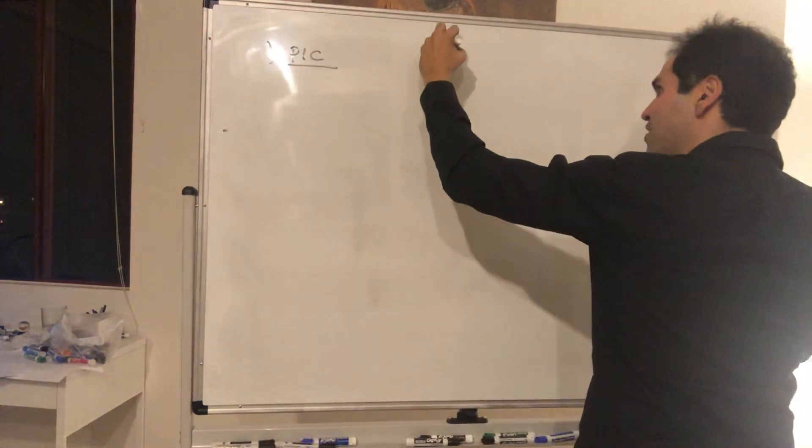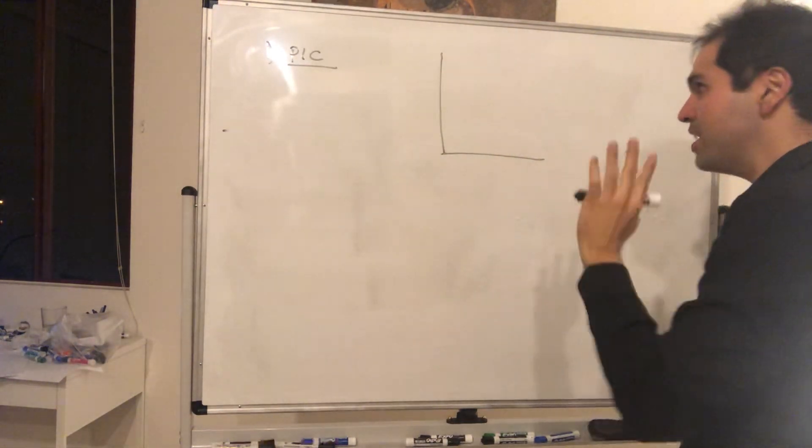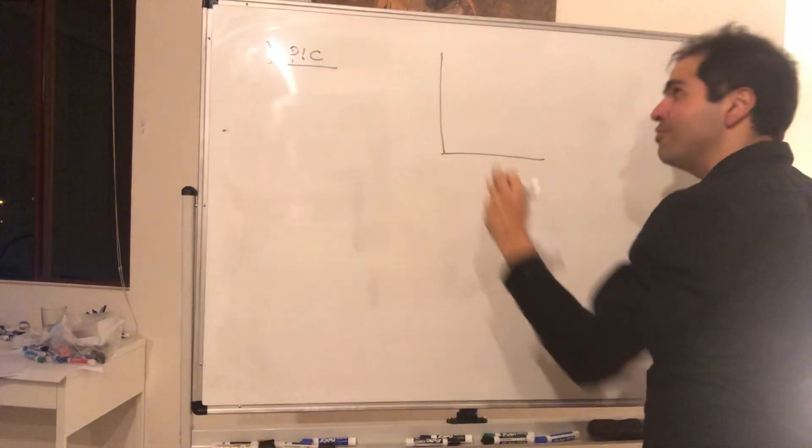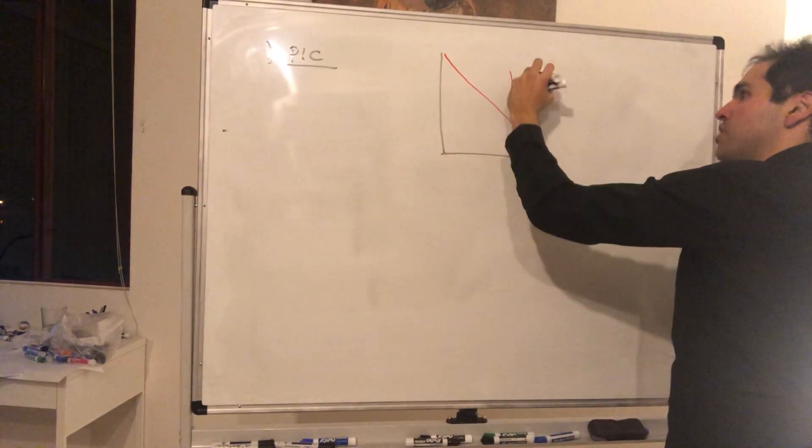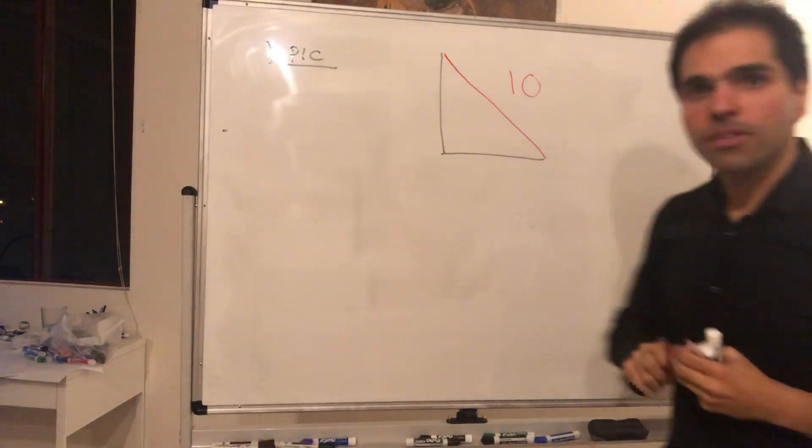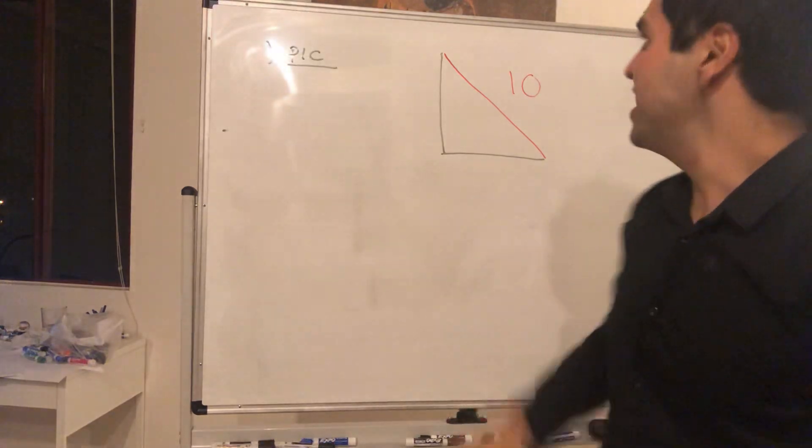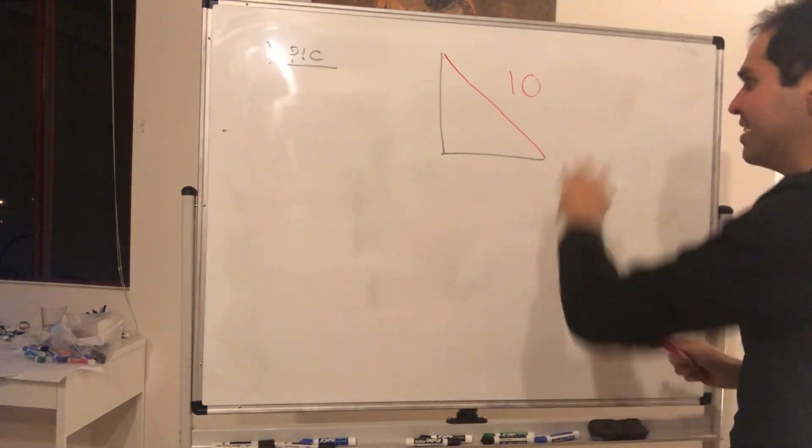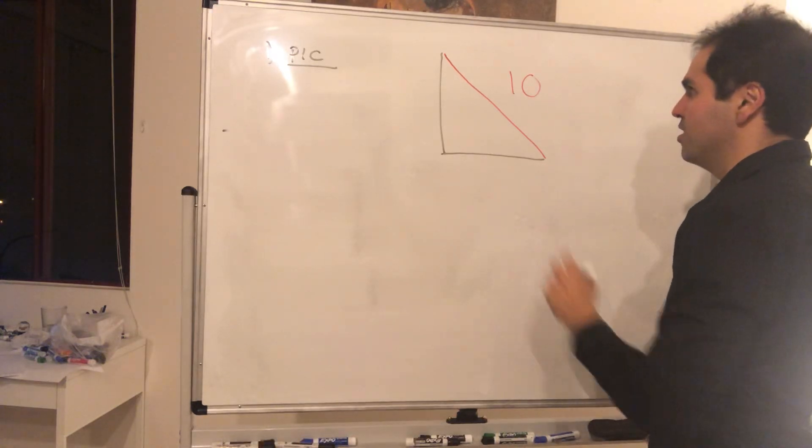We have a ladder that we know is 10 feet long and because the length of the ladder never changes, here it's okay to just put the number 10. The problem is in the other problems oh everything was changing but here at least the length of the ladder is fixed so we can let this be like that.